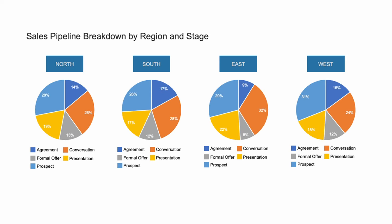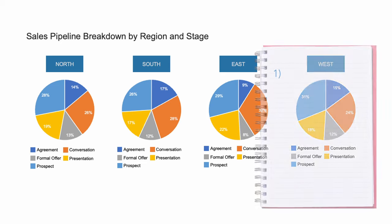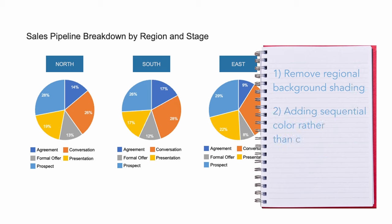Thinking back to what my eyes were drawn to in the original view, I will take steps to: first, remove the background shading from those regional headers; then add sequential color rather than categorical, removing that attention-grabbing orange. And while the duplicated legend was distracting, it also alerted me to the fact that the slices were sorted in alphabetical order, so I'm also going to sort the data in a more logical order.